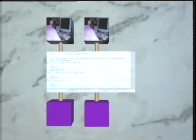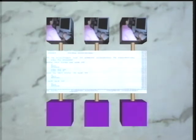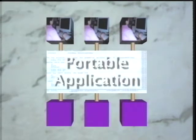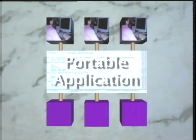To support new types of user interface equipment, the application developer modified and extended the application to support these new types of equipment. When the application needed to be ported to a new system, the application developer had to make significant modifications and extensions to the application. In this environment, a well-written portable application is quite large and contains the code for each of 10 or 15 different computer systems and types of user interface equipment.